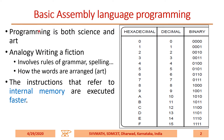Programming is both science and art. An analogy you can give: if you want to write fiction, this involves rules of grammar, spelling, etc. that you should know — and also how the words are arranged. The rules part is basically a science, and how you arrange them is basically an art.